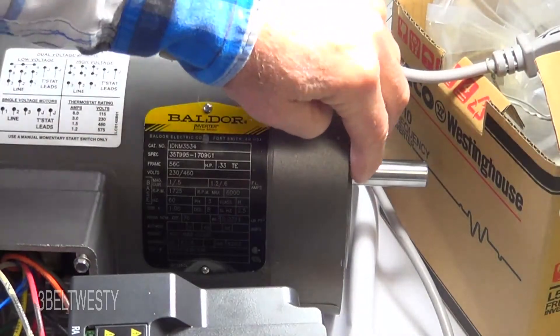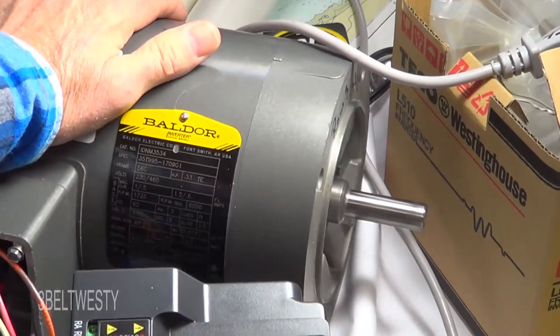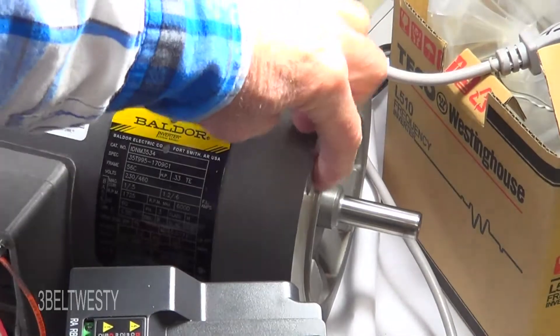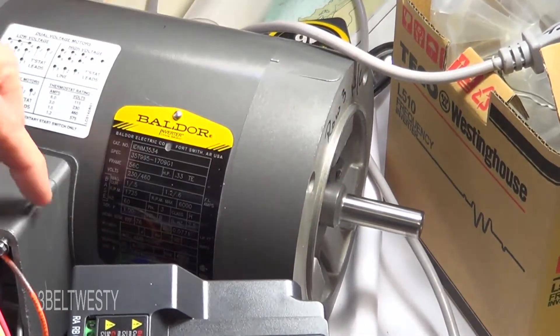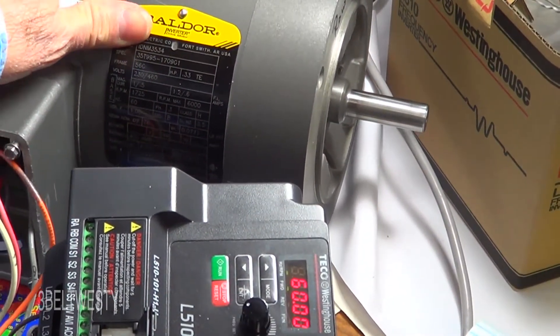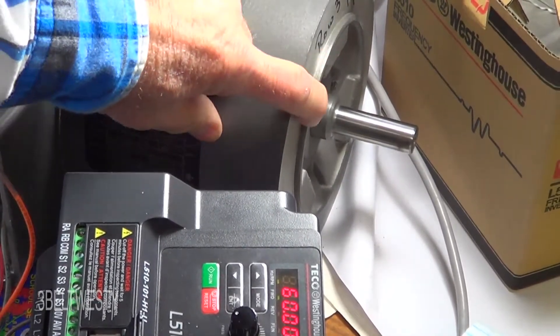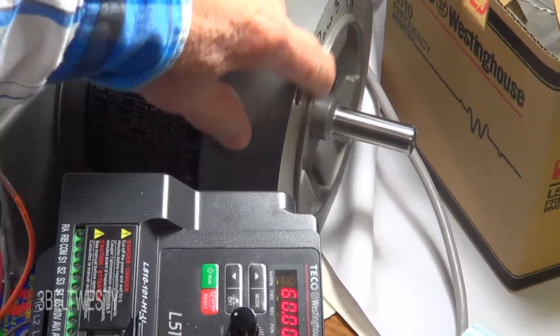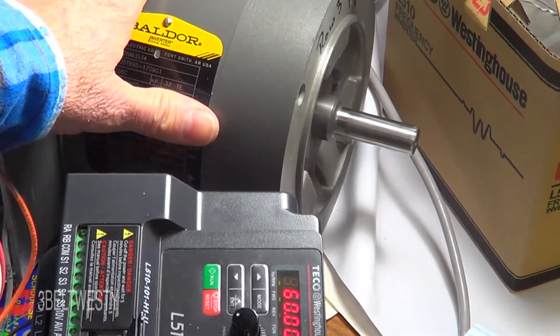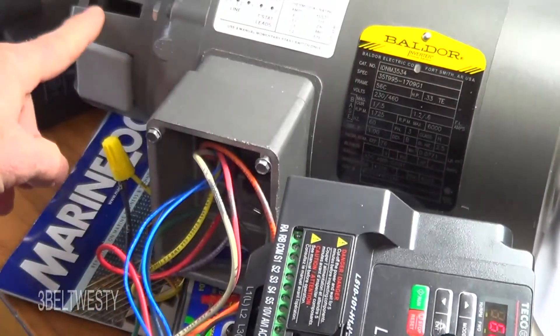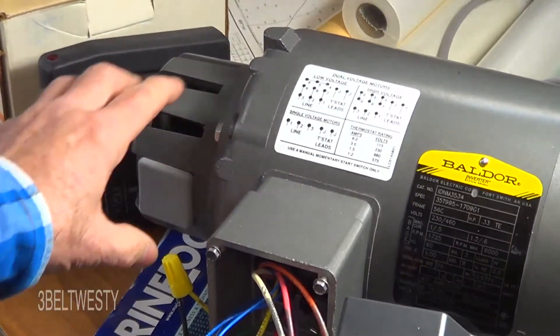Of course this is a 56C motor. C means that the face over here is machined. So this particular motor's got a foot on the bottom plus it has a machined face, what they call a 56C, because of what I'm going to mount this in. And then this is a removable bonnet back here you can take this off.